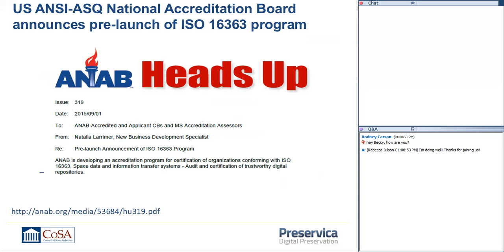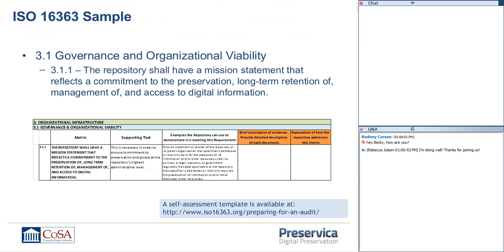An important announcement as of September 1st: the accreditation framework we've all been waiting for is coming online. In the near future, there will be certified external auditors who can go into repositories and assess them for compliance and conformance to ISO 16363. So if you're thinking about becoming certified to 16363, this is actually more real than it has ever been. It's a great standard because it lays out the requirements and gives you ideas about what documentary evidence an auditor would be looking for.